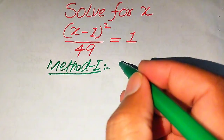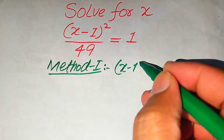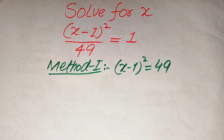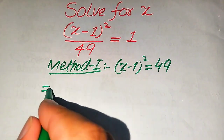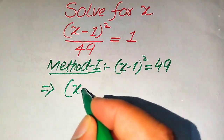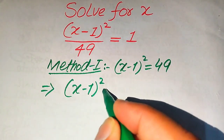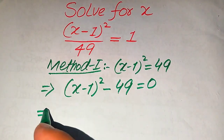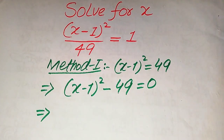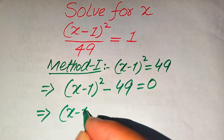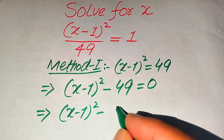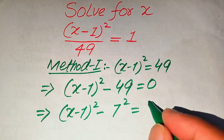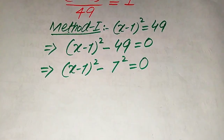In the first method, we move 49 to the right hand side, so it becomes (x minus 1) whole square equals 49. Then we move 49 to the left hand side, giving us (x minus 1) whole square minus 49 equals 0. In the next step we rewrite this equation as (x minus 1) whole square minus 7 squared equals 0.